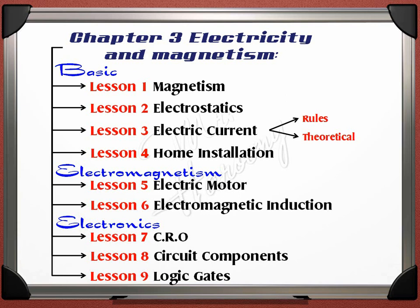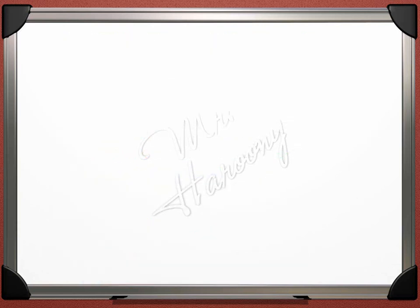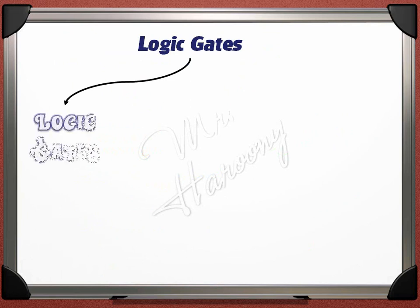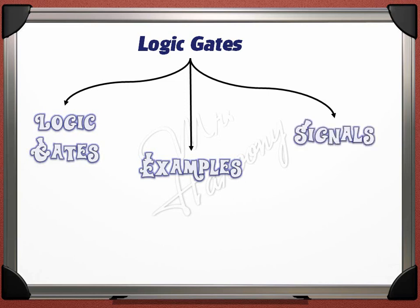This is the last lecture in the chapter: Lecture number 9 of Chapter 3, Electricity — The Logic Gates. We will learn how logic gates work, then we will have some examples, and finally we will talk about signals in electricity.